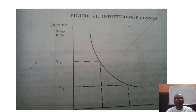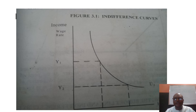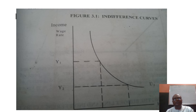For example, Figure 3.1 here demonstrates a map of indifference curves. On the Y-axis you have the wage rate, and on the X-axis you have the hour supply for work. The vertical axis represents wage rates and the horizontal axis represents the hour supply for work.